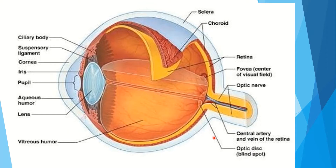At the blind spot, light is focused but no vision is possible. This is the optic nerve — the nerve that connects the eye and the brain, and conveys the visual stimulus from the eye to the brain.